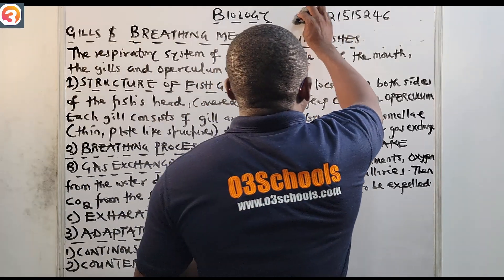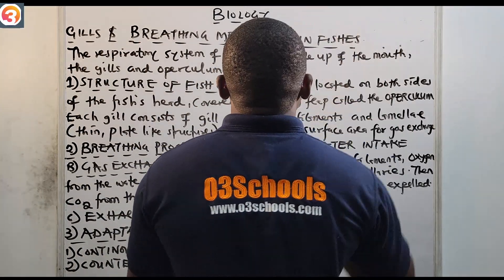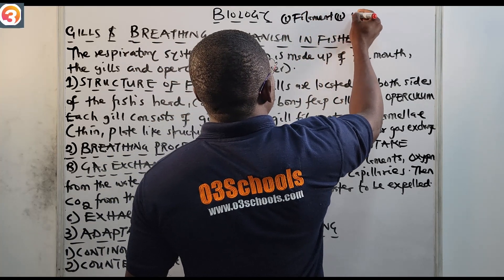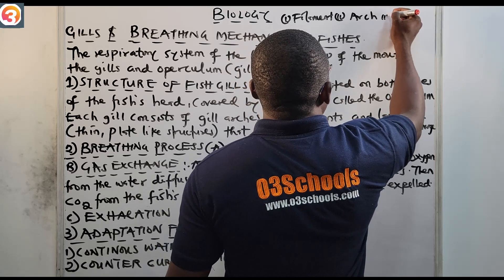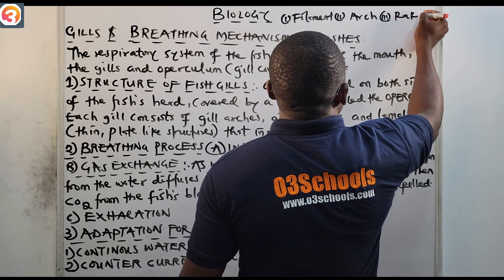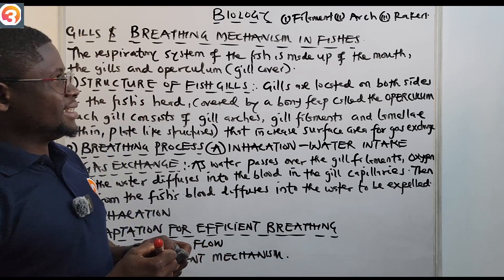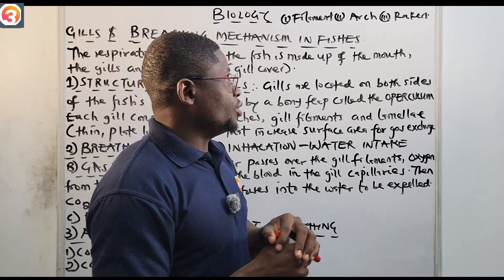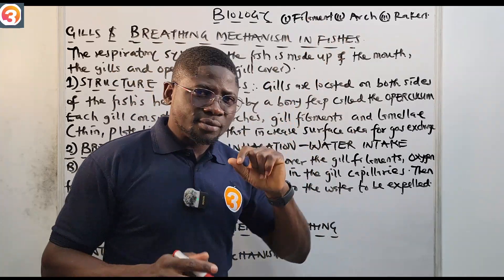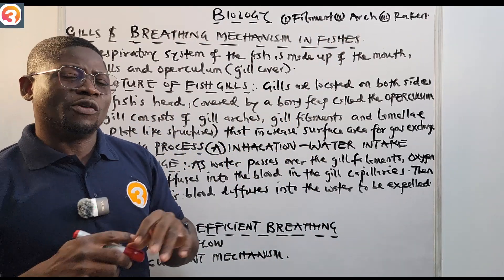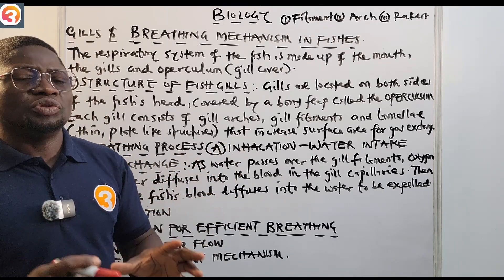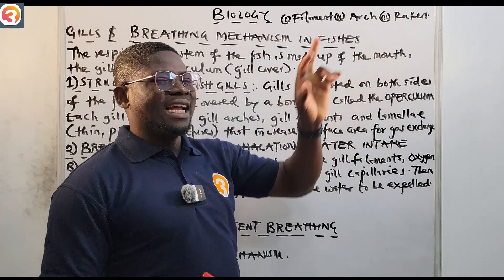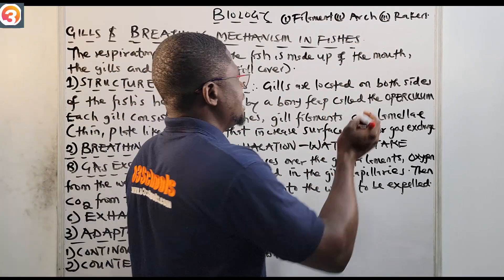The gills are made up of three parts. Number one is the filament. Number two is the arch. Number three is the rakers. The filament is the site for gaseous exchange — that is where gaseous exchange occurs. The arch provides structural support for the gills.